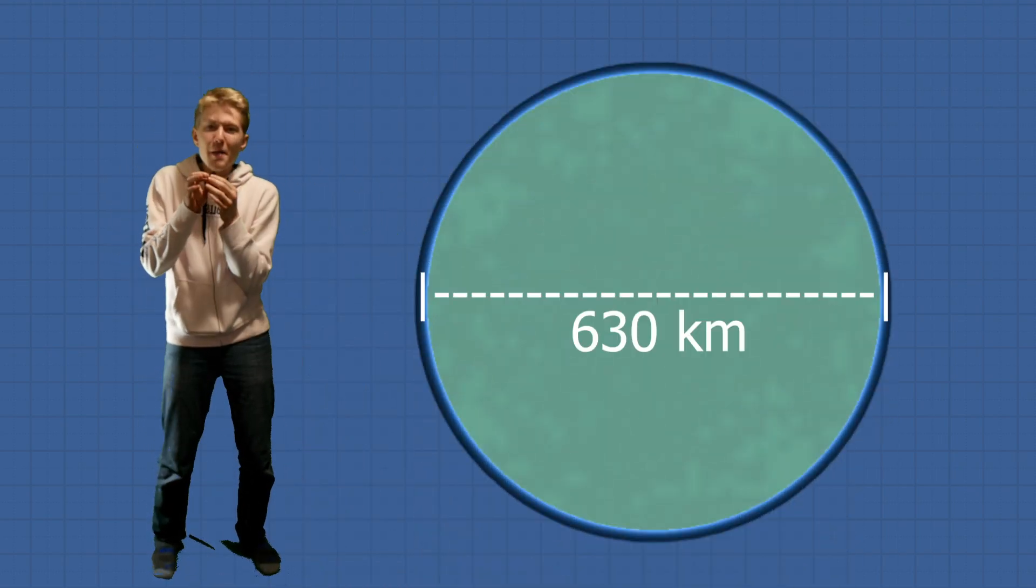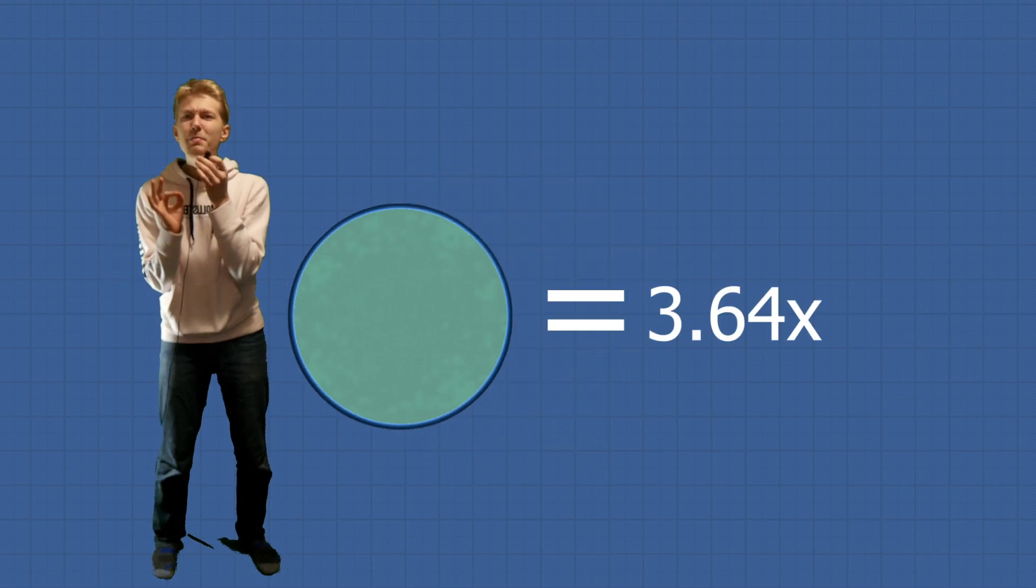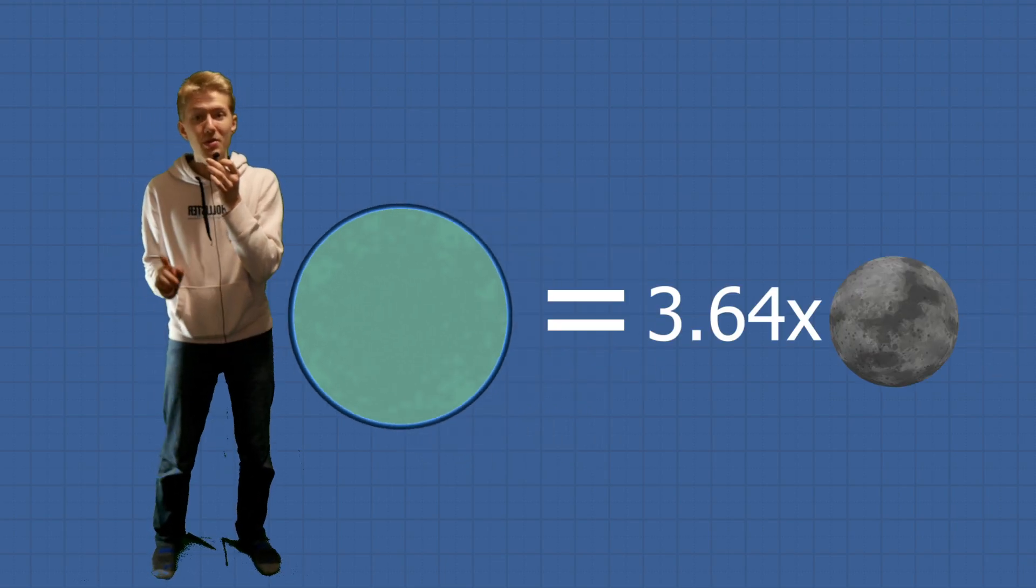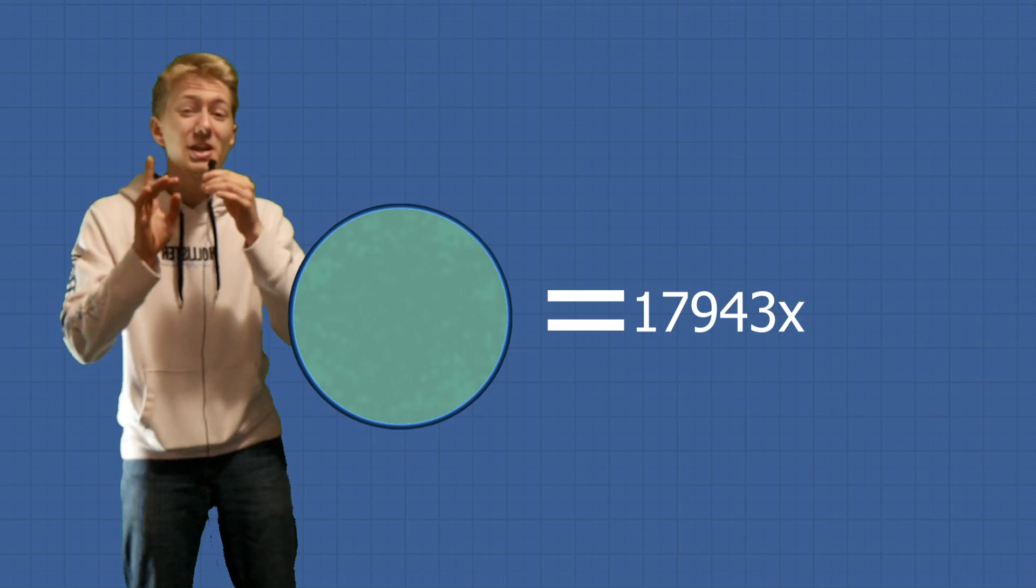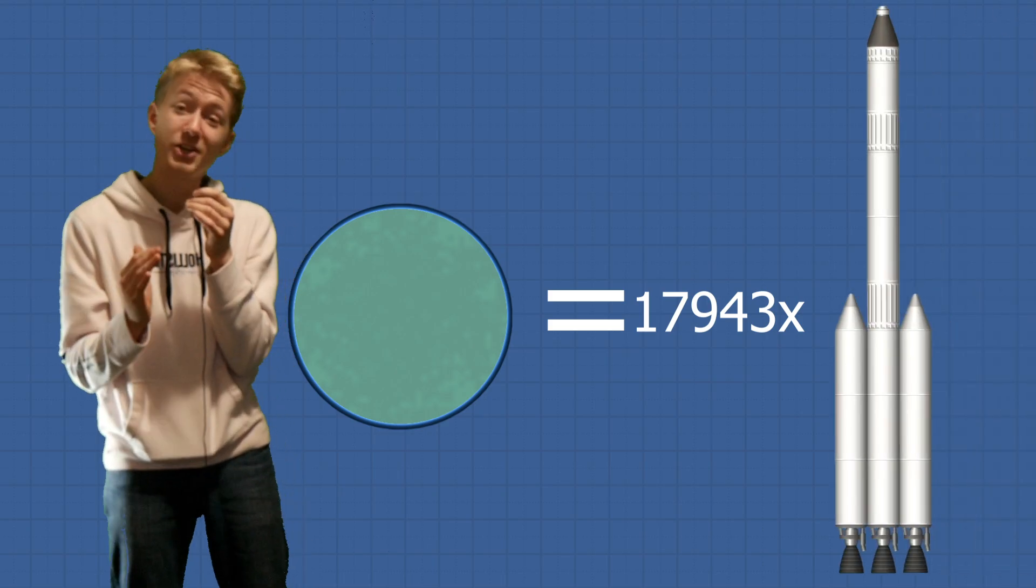Now if we compare the earth to moon, the earth is 630 kilometers, which means the diameter is 3.64 times that of the moon, which is also 17,943 three-stage rockets stacked on top of each other.